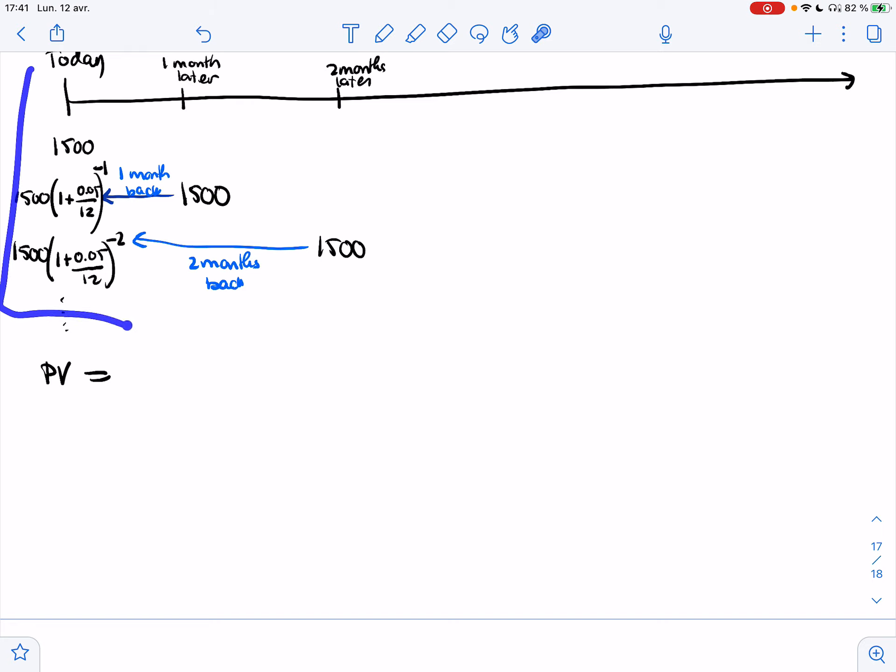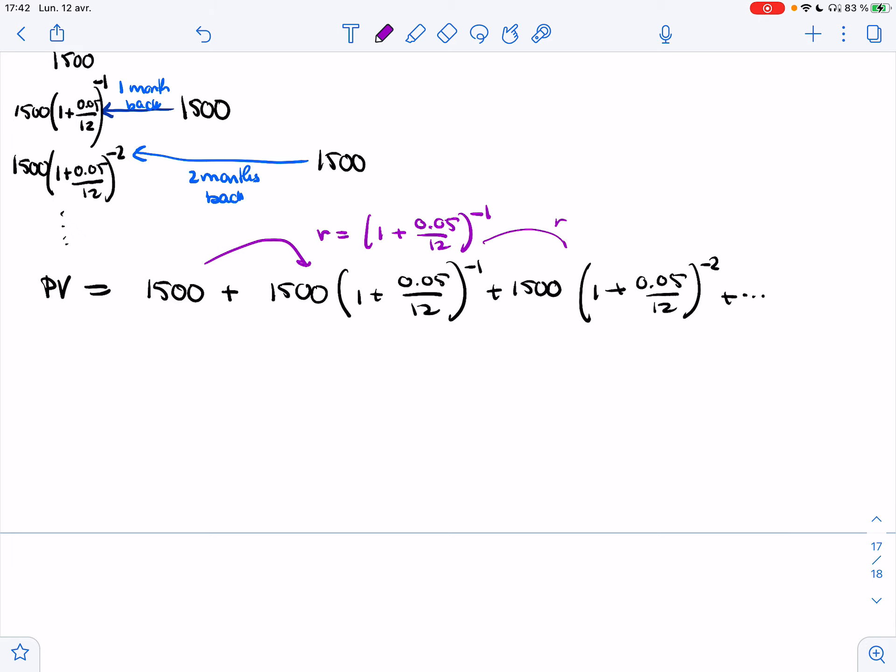And so the present value, the value today would be the sum of this. So it's 1,500 plus 1,500(1 + 0.05/12)^-1 plus 1,500(1 + 0.05/12)^-2, and so on. Notice that at every step, I multiply by (1 + 0.05/12)^-1 because I'm pulling the amount back a month more than the one before. Same thing here.